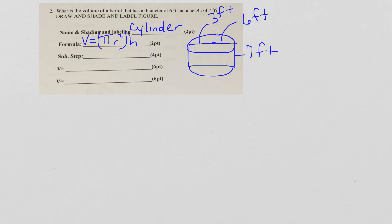Now I have a barrel. This has two bases, so I'm going to go ahead and gently shade the bases in. The 6 is the diameter — I take 6, divide it by 2, and I get my radius of 3. The 7 feet is my height. I've labeled it cylinder and put my formula in: V equals pi R squared times height, where the base is a circle.